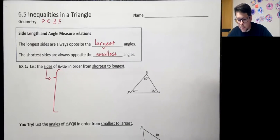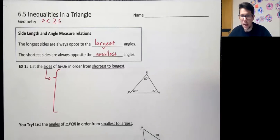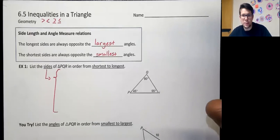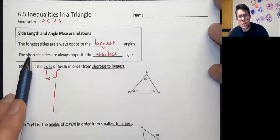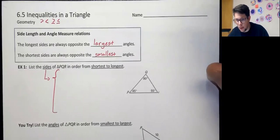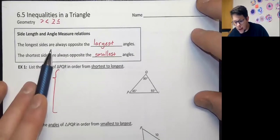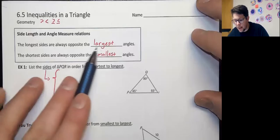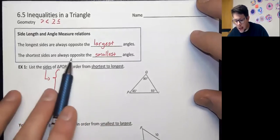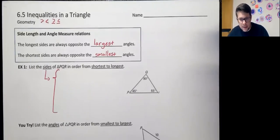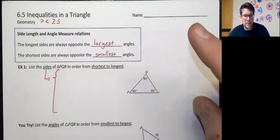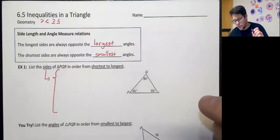You've already done your exploration, where you were talking about large sides and large angles, small sides and small angles. Let's formalize that a little bit. The longest sides are always opposite the largest angles, and the shortest sides are always opposite the smallest angles.